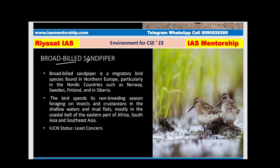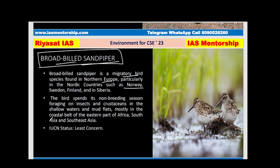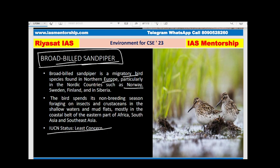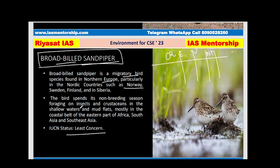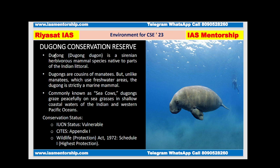The Broad-billed Sandpiper is a migratory bird species found in Northern Europe and Nordic countries such as Norway, Sweden, Finland, and in Siberia. IUCN status: Least Concern. The bird spends its non-breeding season foraging on insects and crustaceans in shallow waters and mud flats, mostly in the coastal areas of eastern Africa, South Asia, and Southeast Asia.